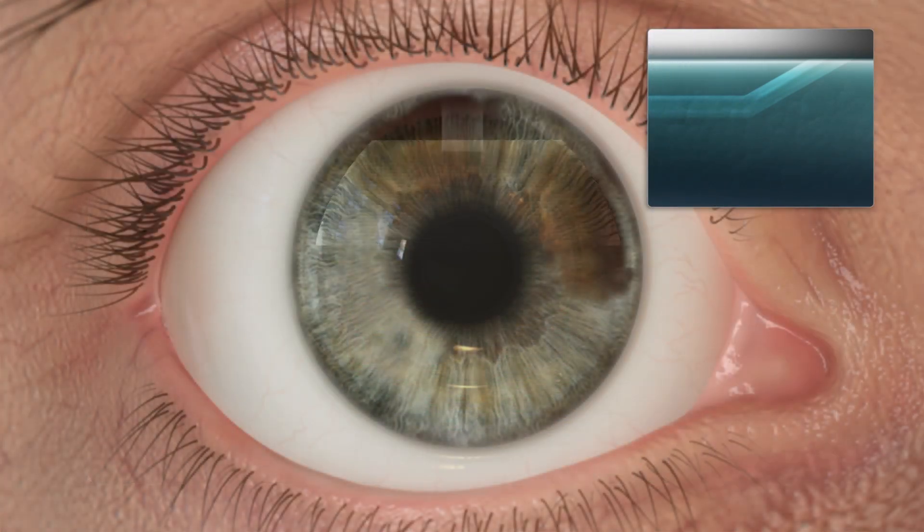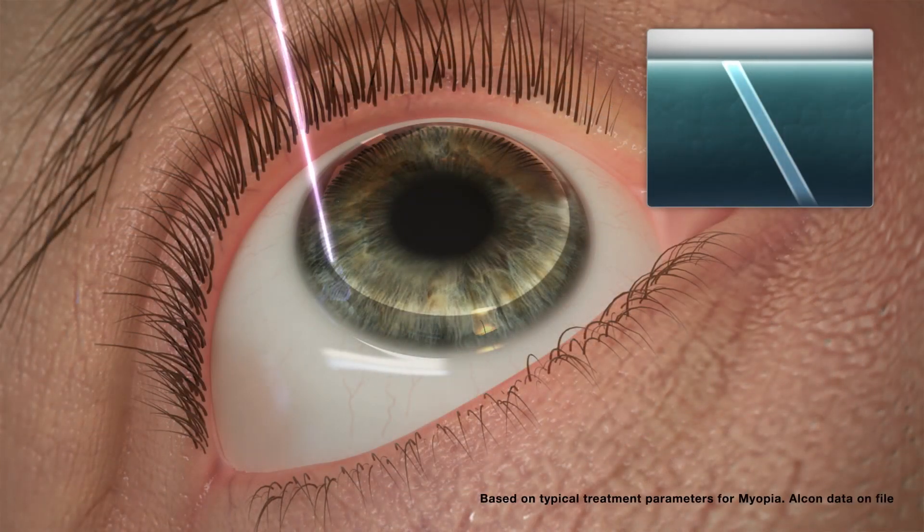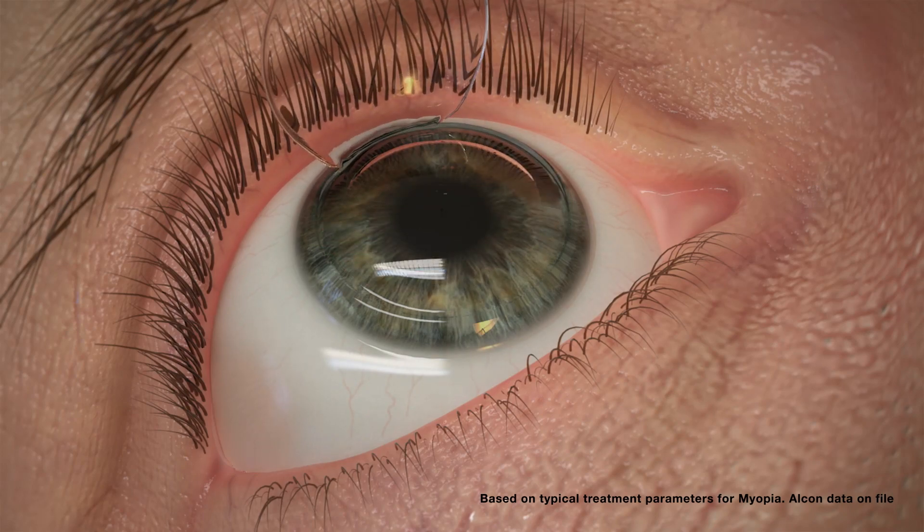Once the cleavage plane is complete, a side cut treatment is applied, allowing the Wavelight FS200 to create a standard flap in approximately six seconds.